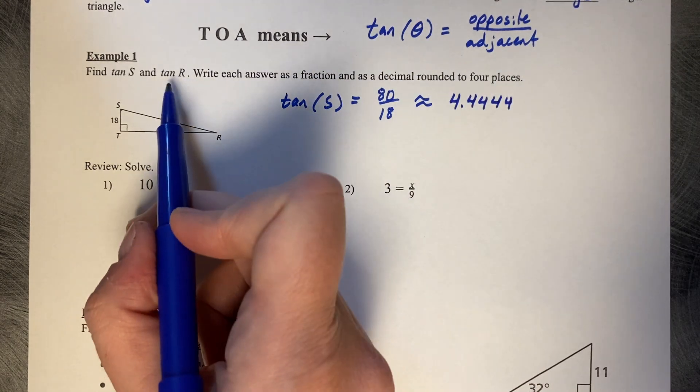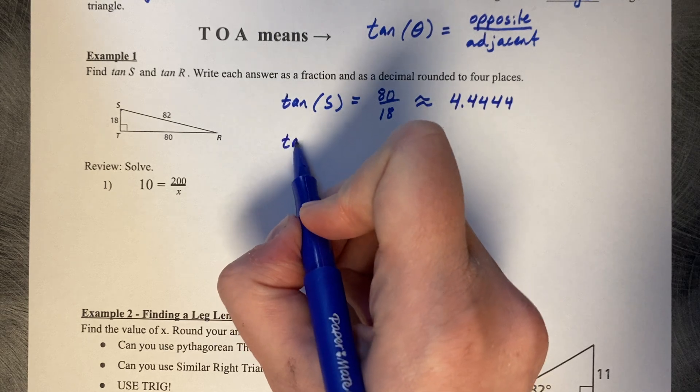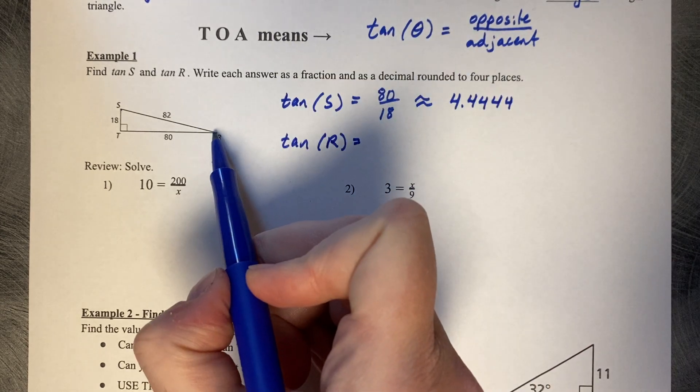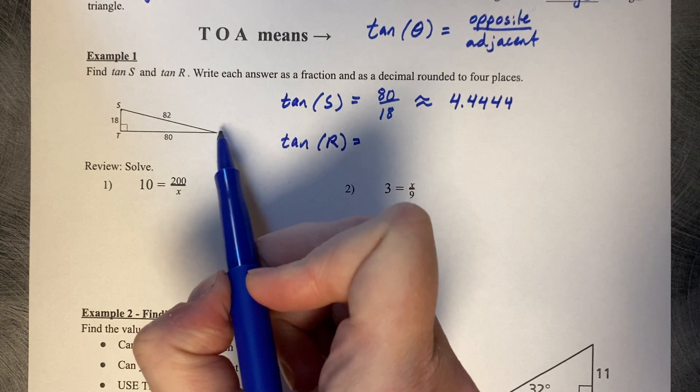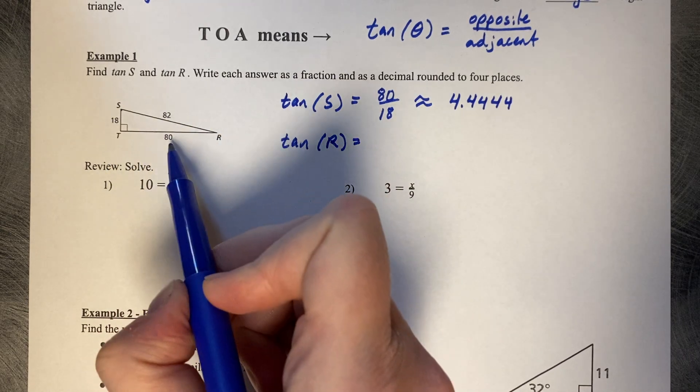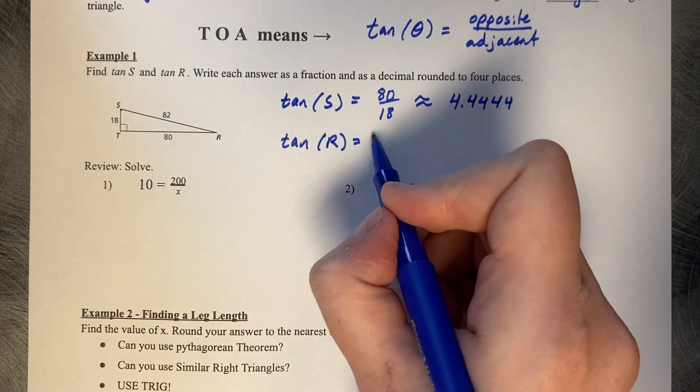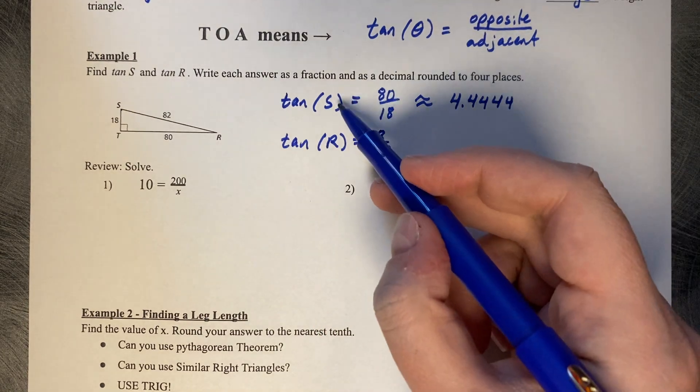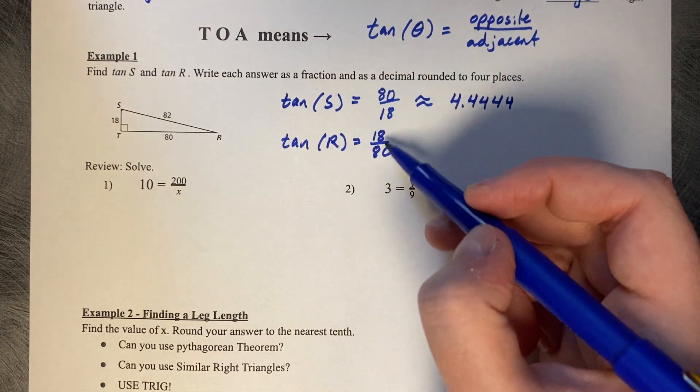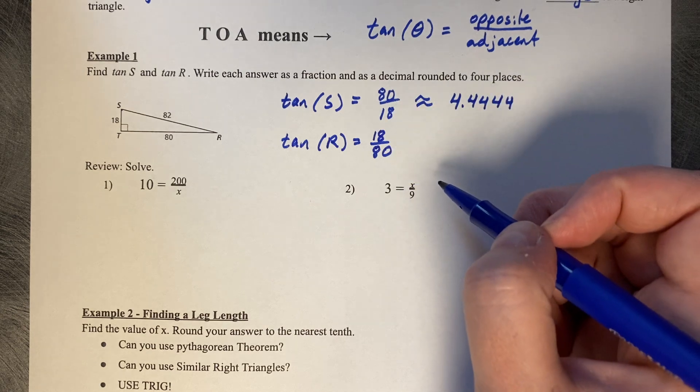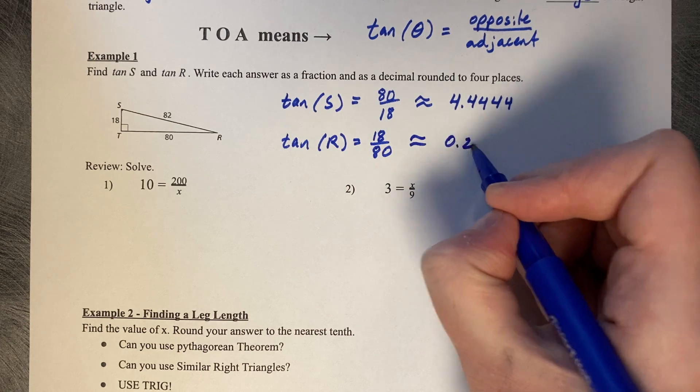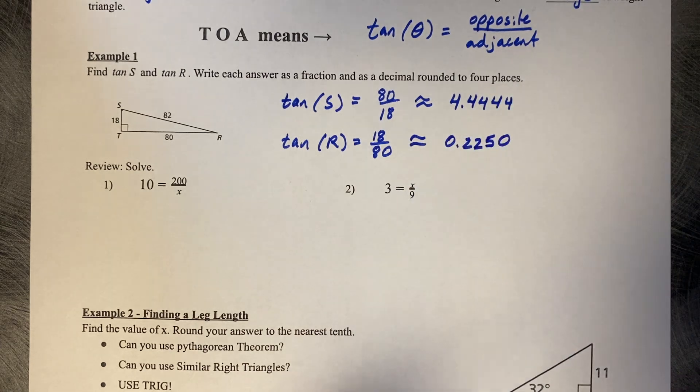They also want the tangent of R. Put your pen on R, opposite over adjacent would be 18 over 80. Depending on which theta you're working with, the arrangement of opposite over adjacent flips, which is approximately 0.2250.